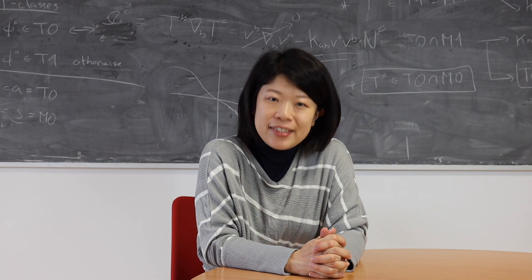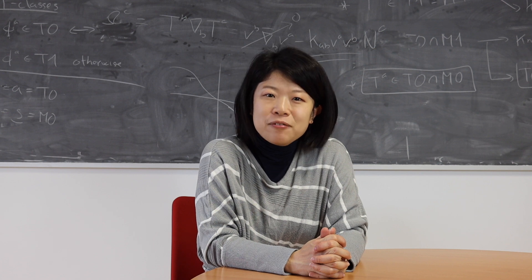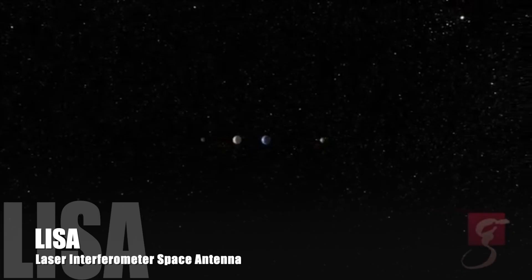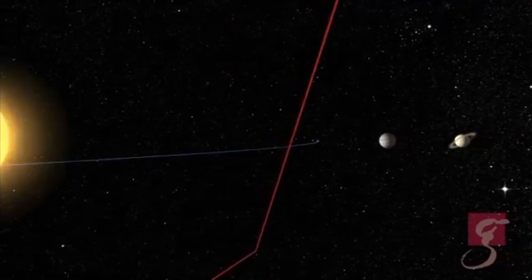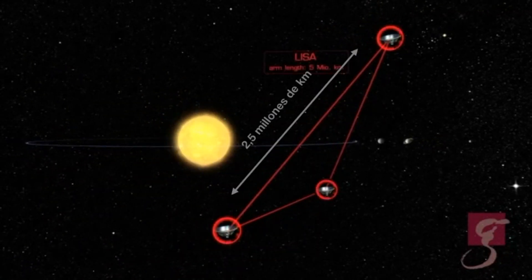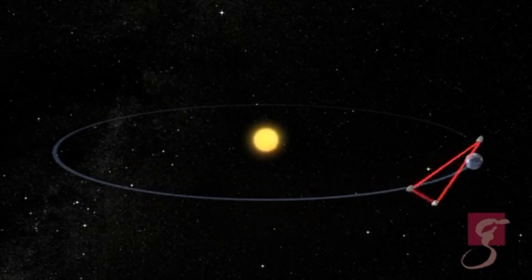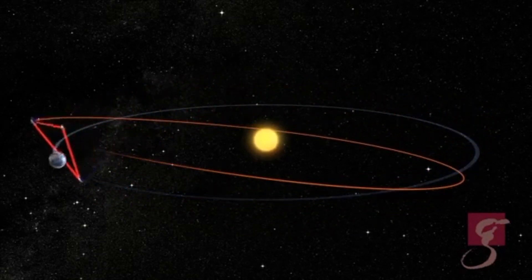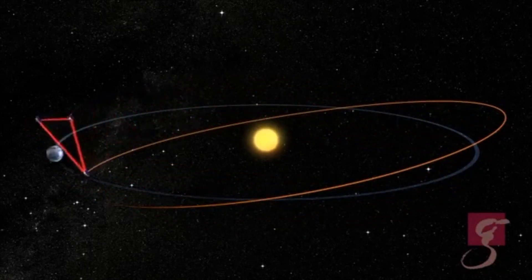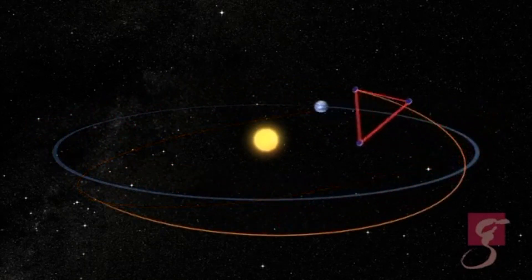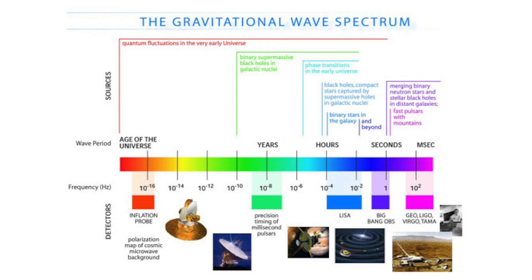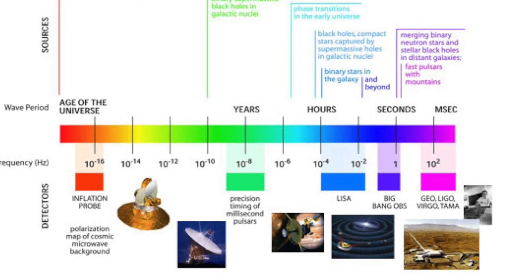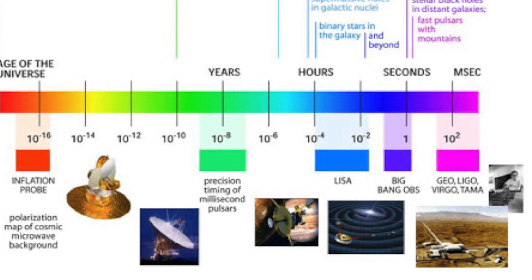Gravitational wave detectors will be launched to space in 2034. The name of the detector is LISA, and it constitutes a laser interferometer with an arm length of 2.5 million km. Thanks to the very long arm length, we can observe gravitational waves with good sensitivity at different wavelengths. In the case of LISA, it will observe very low frequency gravitational waves, and it's sensitive to more massive black hole binaries.